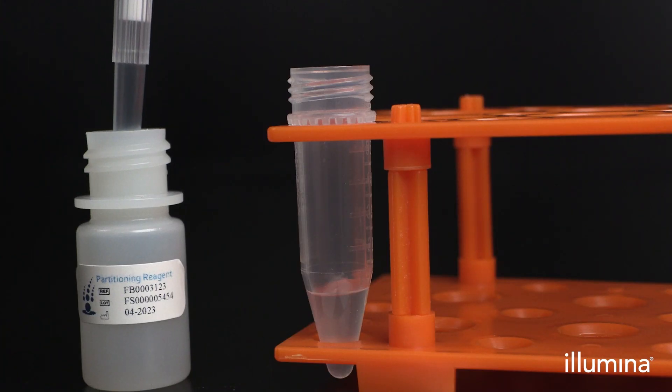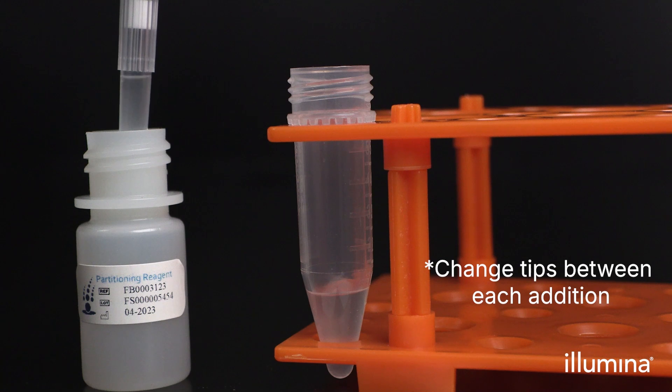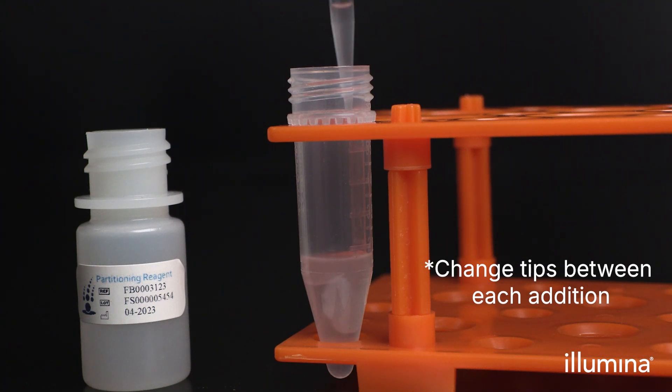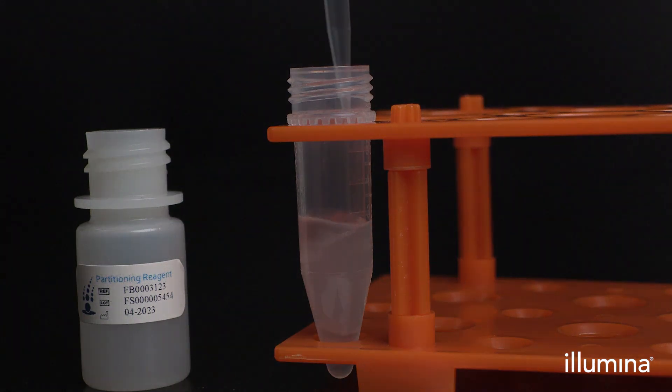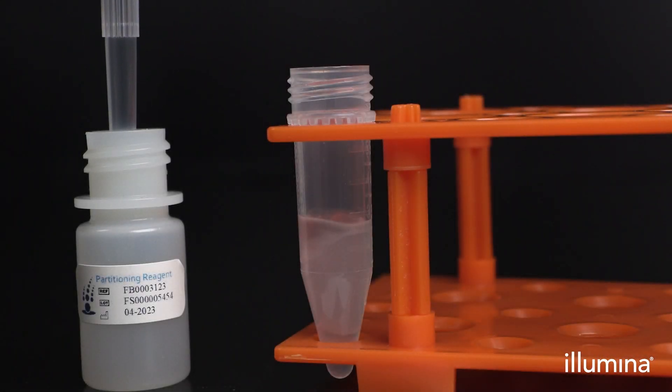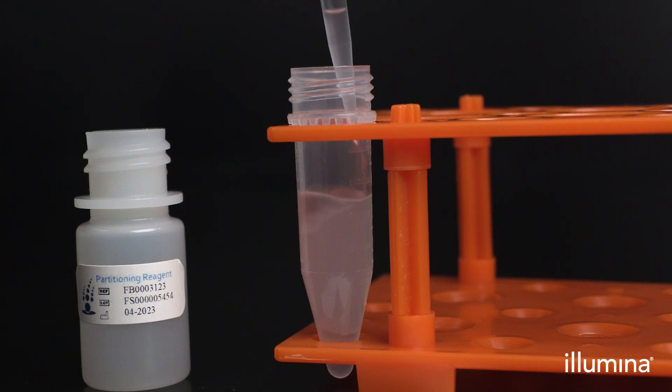Next, add 4000 microliters of partitioning reagent down the sidewall of the PIP tube using a P1000 pipette. Do not use serological pipettes for this step.